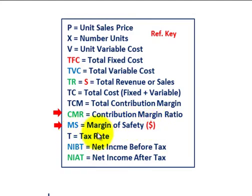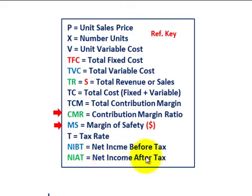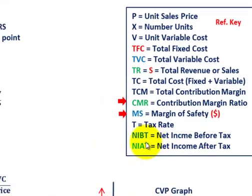T is our tax rate. Net income before taxes is shown in blue, and net income after taxes — those are our net income here after taxes.